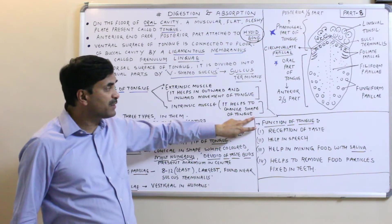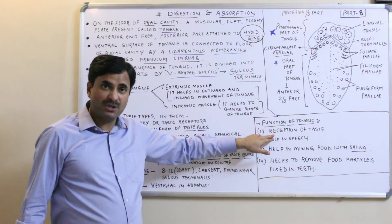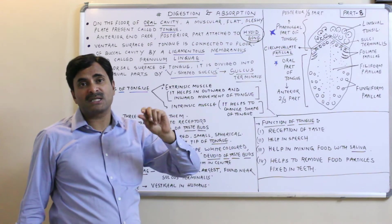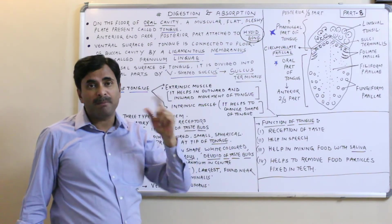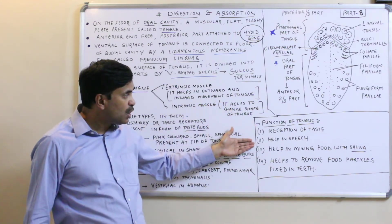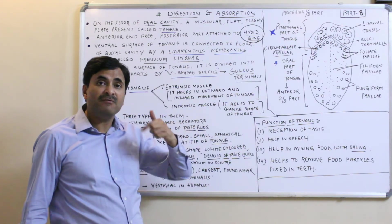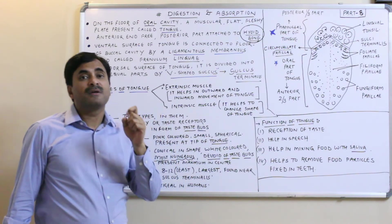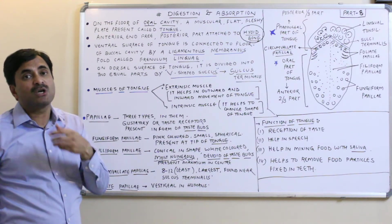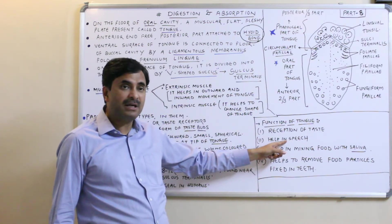Now let's talk about the functions of the tongue. The main function of the tongue is the reception of taste — various types such as sweet, salt, sour, and bitter. The reception of taste is because of the tongue. The tongue is also helpful in speech; when we speak, our tongue shows movement with the palate, allowing us to talk properly.